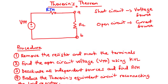According to Thevenin's theorem, any linear circuit connected between two terminals can be replaced by a Thevenin's voltage in series with a Thevenin's resistance. The Thevenin's voltage, VTH, is the voltage seen between the two terminals A and B. The Thevenin's resistance, RTH, is the equivalent resistance seen between the two terminals when all the independent sources are deactivated.